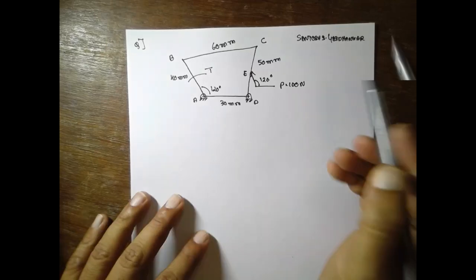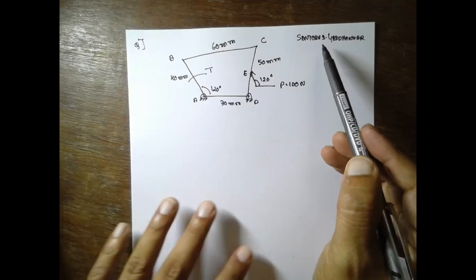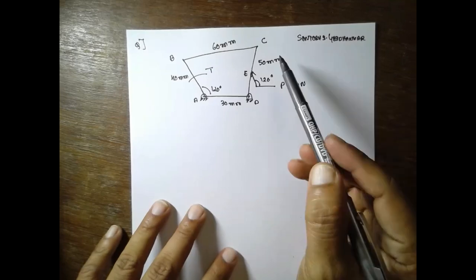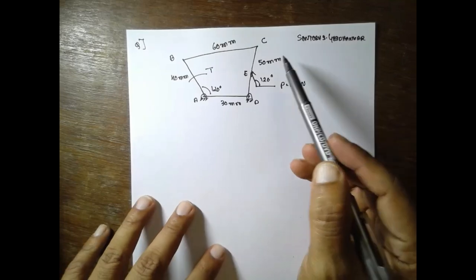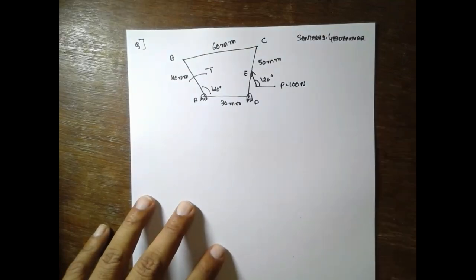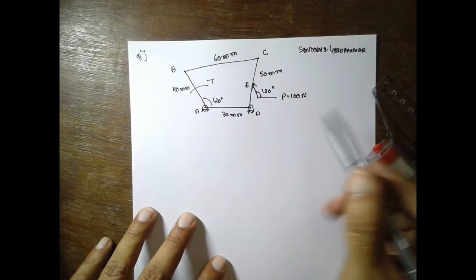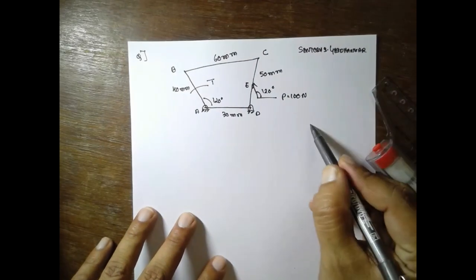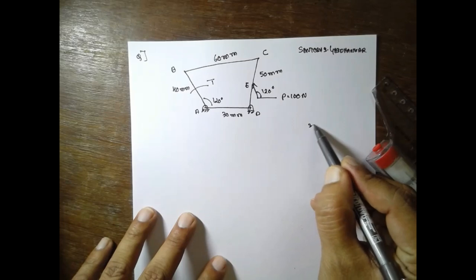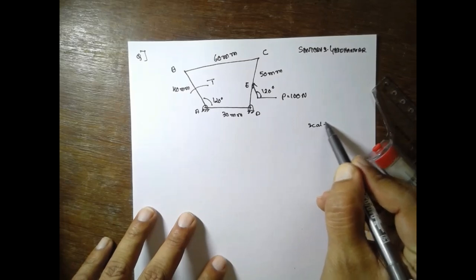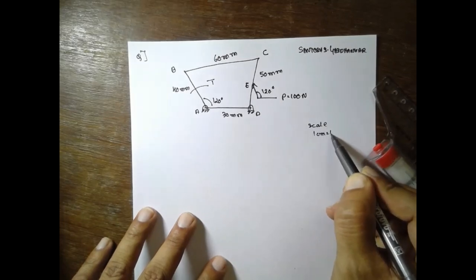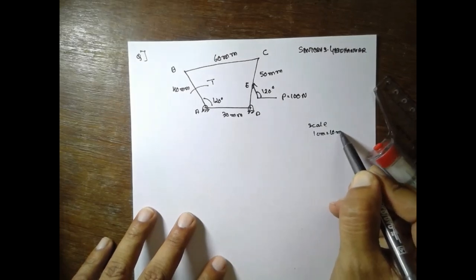I am Santosh Gadankar. Today I am solving the problem of dynamic swap machine. In the dynamic swap machine, I am focusing on the static equilibrium problem. This is the problem they have given. I will consider the scale: 1 cm is equal to 10 mm.